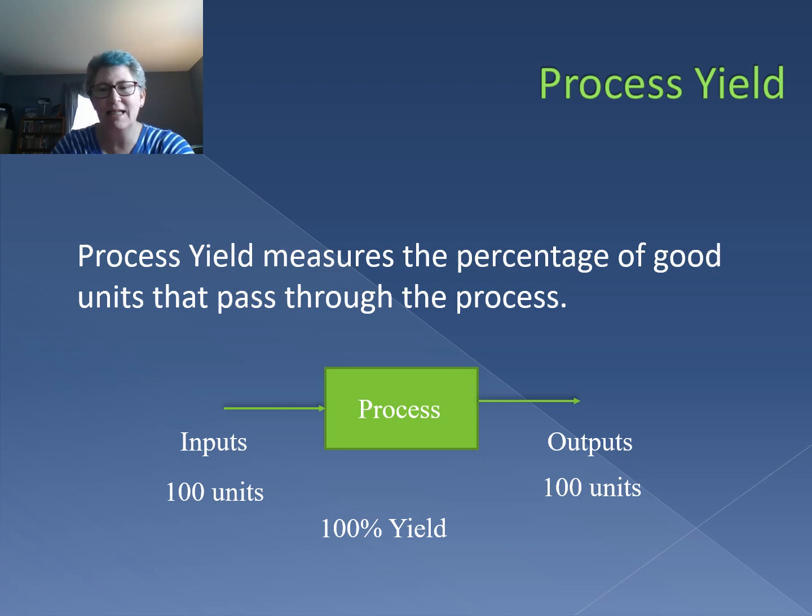But in reality, that's not the case. A lot of times what happens is you start with a certain number, but due to defects in manufacturing or some problems with raw materials, you don't end up with the total number of inputs. You could start with 100 units and end up with 95. In that case, we have what's known as a 95% yield because we have 95 outputs over 100 inputs.